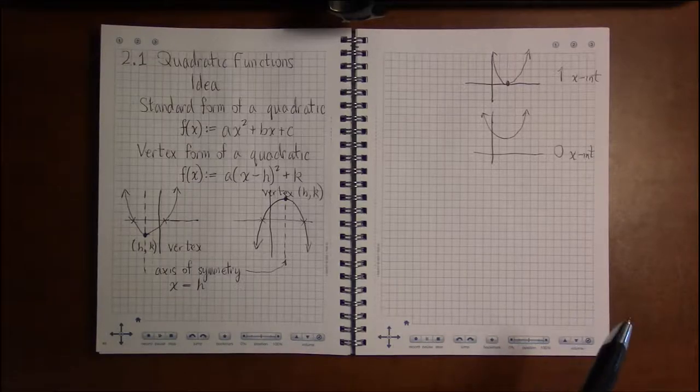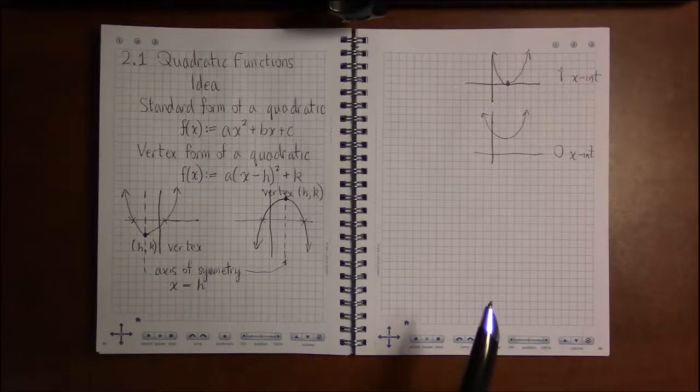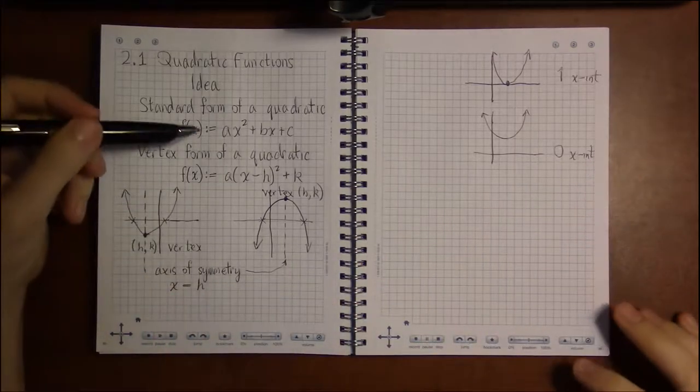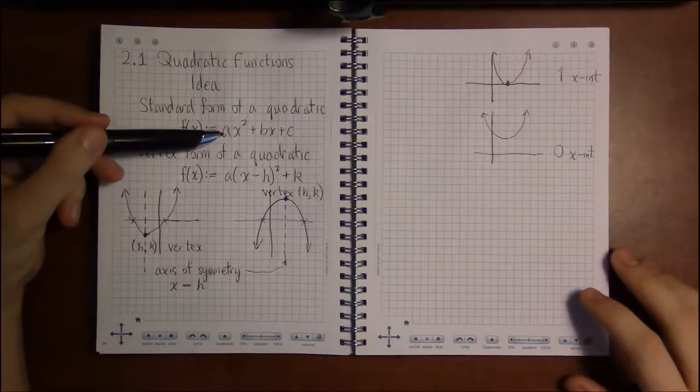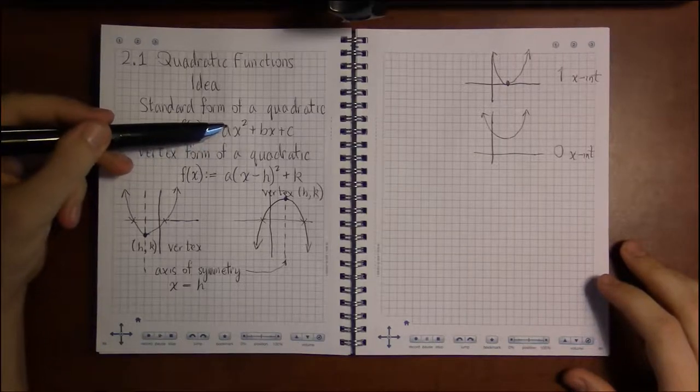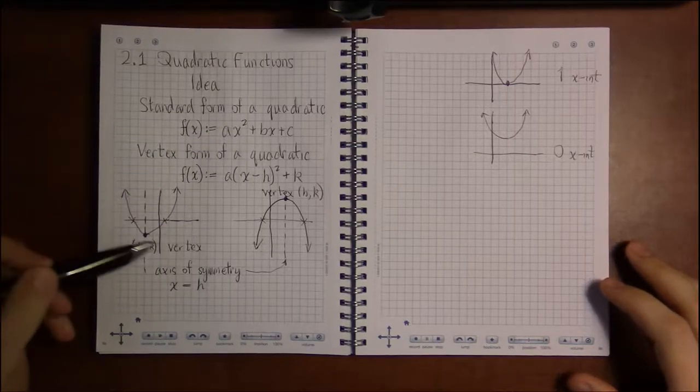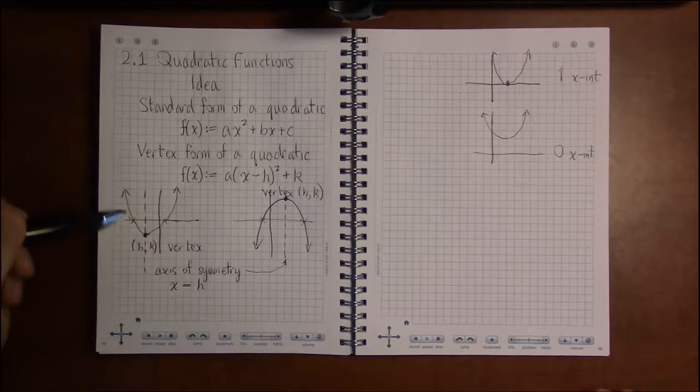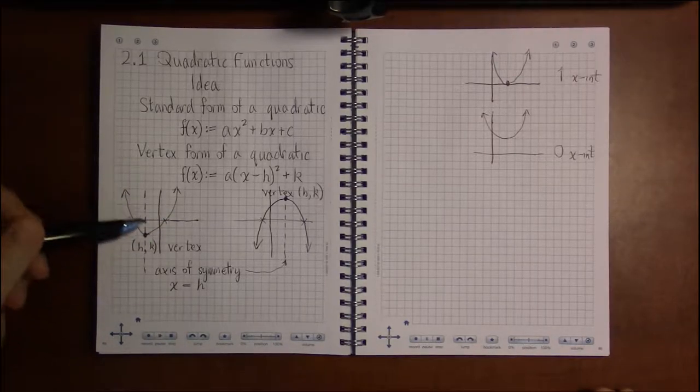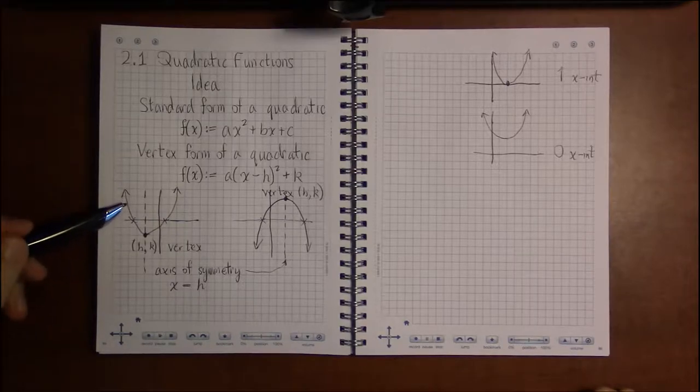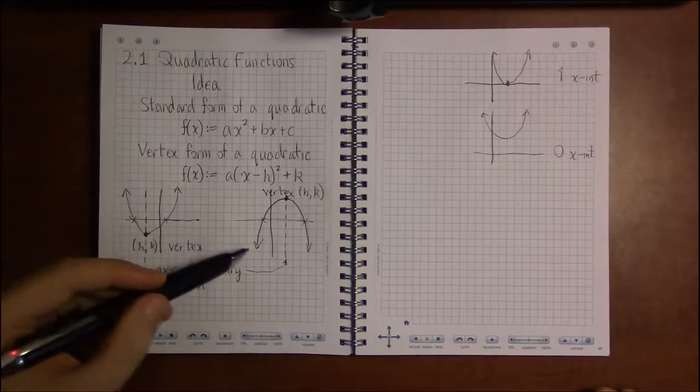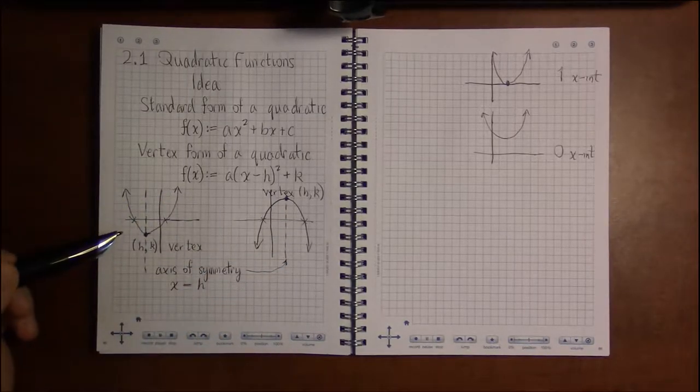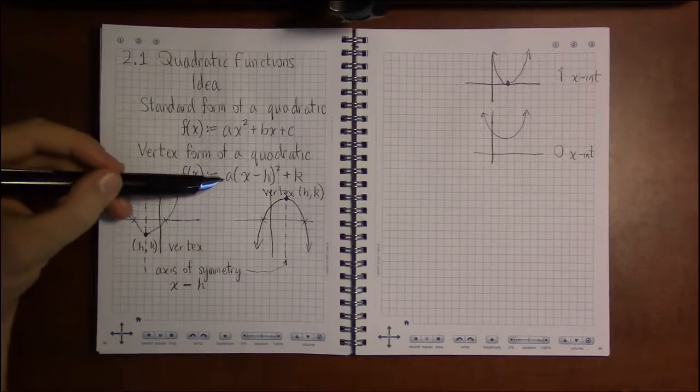So if we start out with the simple characteristics of connecting the algebraic and the geometric forms: one big feature is that parabolas can either open up or open down, and that's determined simply by the leading coefficient, this 'a' in both the standard and the vertex form. In a quadratic, if a...